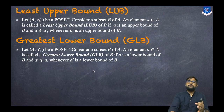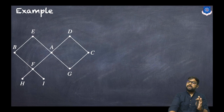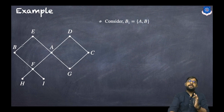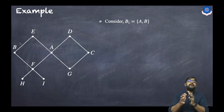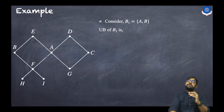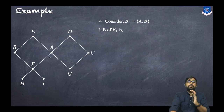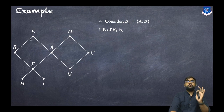Let us discuss the first example with the given Hasse diagram. Consider B1 = {a, b} — this is a and this is b. We want to find the GLB and LUB of this given set. First we will find the upper bound of B1, meaning the upper bound of a and b. For an upper bound there has to be a relation from the given set to the upper points. The upper points are e and d. Can we go from b to e? Yes. Can we go from a to e? Yes. So e is an upper bound.